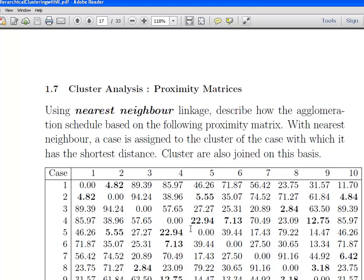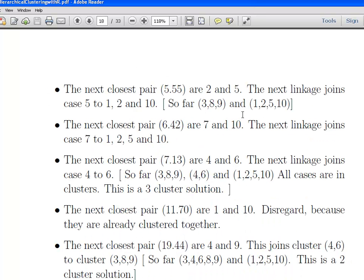After that we're going to add in 5, because the next nearest neighbors are 2 and 5. So we have 1, 2, 5 and 10. The next closest pair is 6.42, that joins 7 and 10. The next closest pair after that will be 4 and 6. So we have 3, 6 and 9, 4 and 6, and 1, 2, 5 and 10. 7 should be in there as well. So all cases are in clusters. This is a 3 cluster solution.